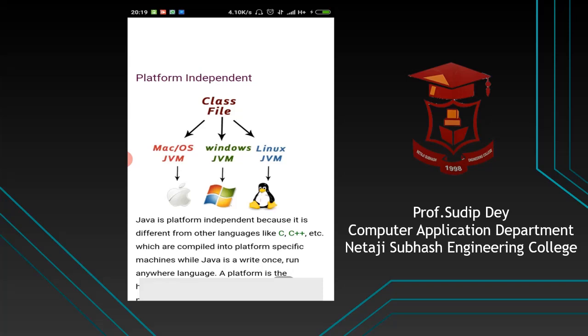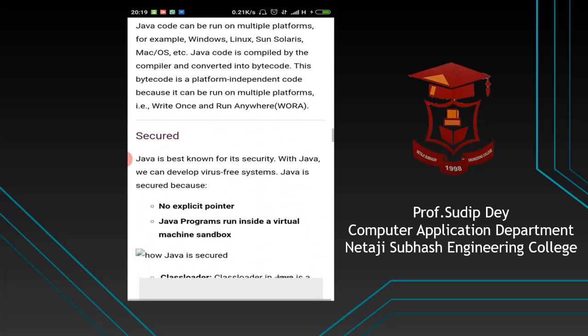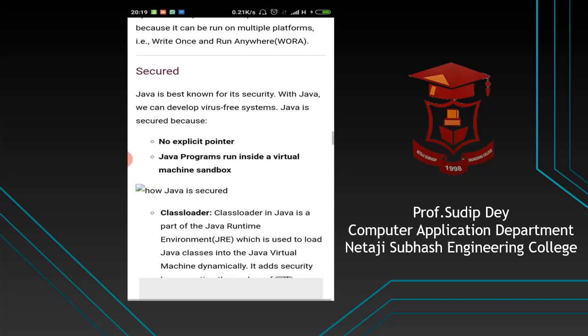It may be the Mac operating system, Windows, or Linux. So the actual purpose of Java being platform independent is our JVM — the Java Virtual Machine. And byte code is a special thing specific to our Java program.